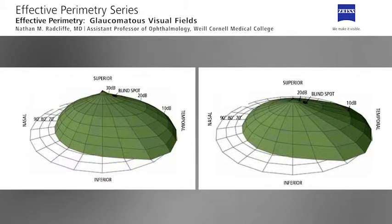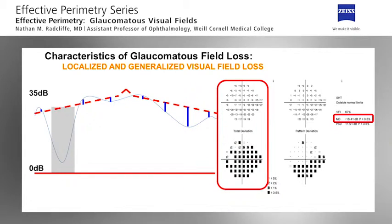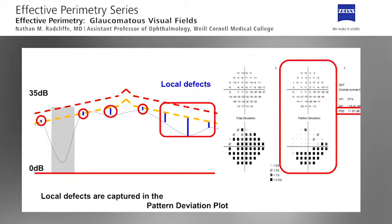Instead, it is much more frequently caused by increasing cataract or miosis. With automated perimetry, being able to capture and discern between generalized and localized field loss can assist in the prognosis of different types of disease states. Here the dotted red line shows generalized field depression, which is reflected in the visual field test results in the total deviation plot. With the blue lines, you can see the localized defects in the visual field, which is captured in the pattern deviation plot.